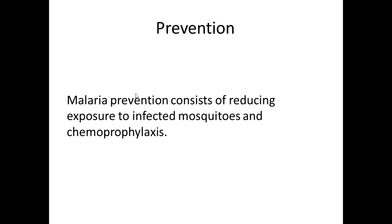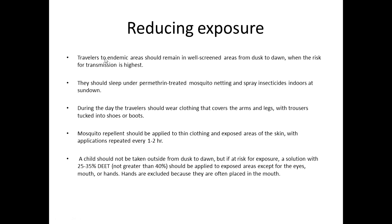Malaria prevention consists of two measures: reducing exposure to infected mosquitoes, and chemoprophylaxis. For reducing exposure, travelers to endemic areas should remain in well-screened areas from dusk to dawn when transmission risk is highest. They should sleep under permethrin-treated mosquito netting and spray insecticide indoors at sundown. During the day, travelers should wear clothing covering arms and legs with trousers tucked into shoes or boots. Mosquito repellent should be applied to clothing and exposed skin, repeated every one to two hours. Children should not be taken outside from dusk to dawn, but if exposure risk exists, a solution with 25–35% DEET should be applied to exposed areas, except for the eyes, mouth, or hands — hands are excluded because they are often placed in the mouth.